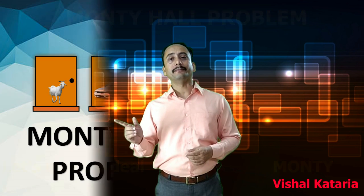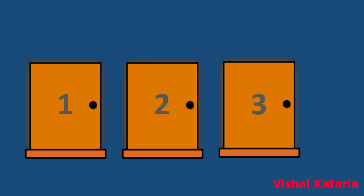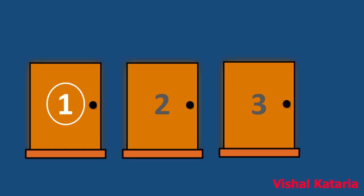Here is the problem. Suppose you are on a game show and you are given a choice of three doors. Behind one door is a car, and behind the others, goats. You pick a door, say door number one. The host knows what's behind the doors, and out of door number two and three, there exists at least one door which has a goat behind it. The host opens one of those doors, say door number three.